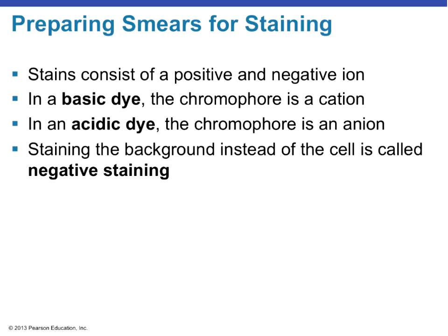Stains can carry a positive or negative ion. With a basic dye, the staining ion — the chromophore — is called a cation, and cations carry a positive charge. An easy way to remember: there's a plus sign in the middle of the word cation — the T. In an acidic dye, the chromophore is an anion, which carries a negative charge. This matters because opposite charges attract: if a structure is negatively charged, use a positively charged chromophore to stain it, and vice versa.